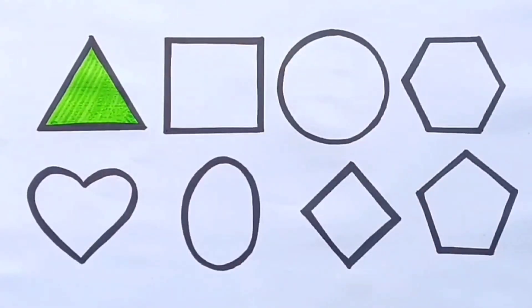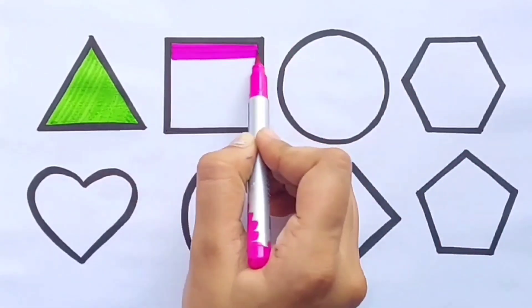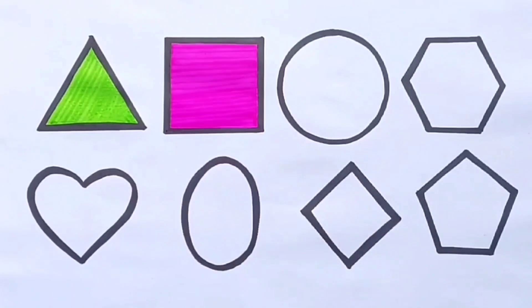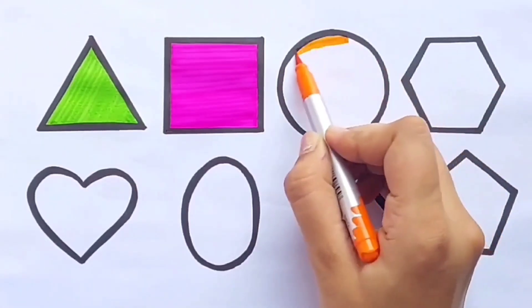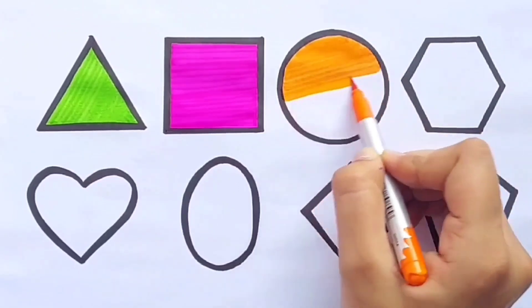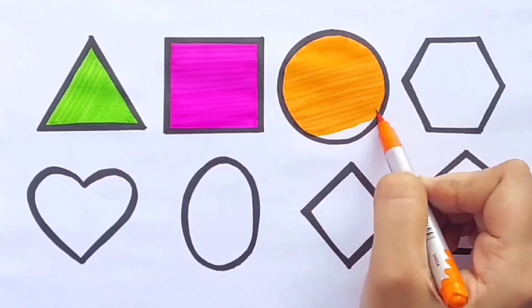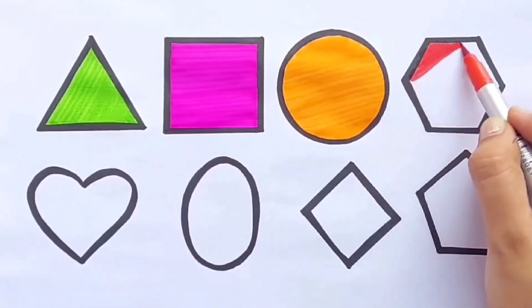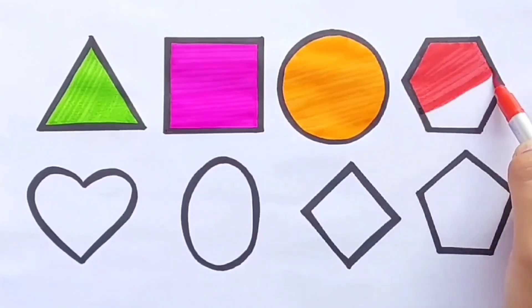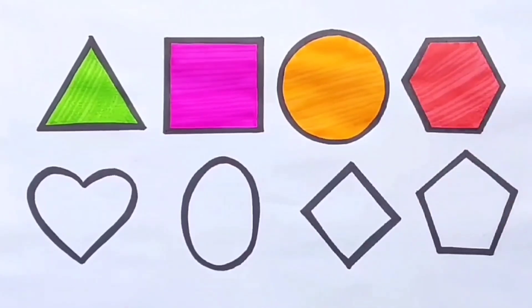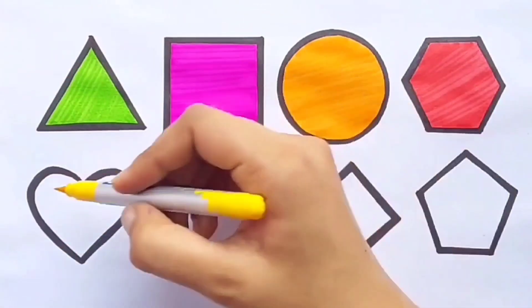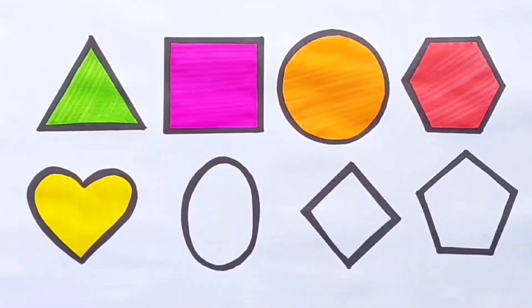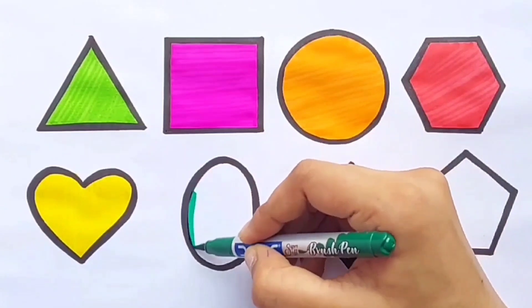Triangle, pink color. Square, orange color. Circle, red color. Green color.